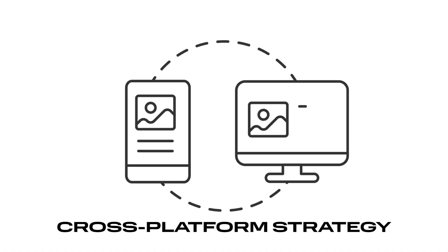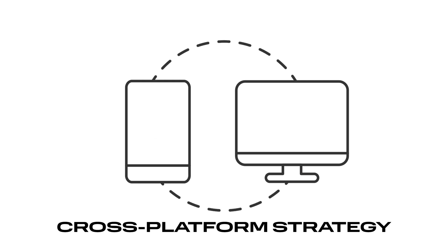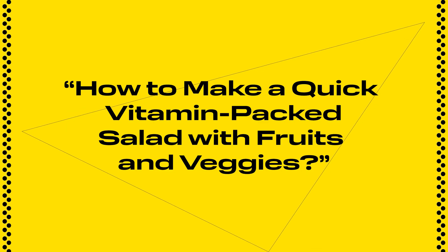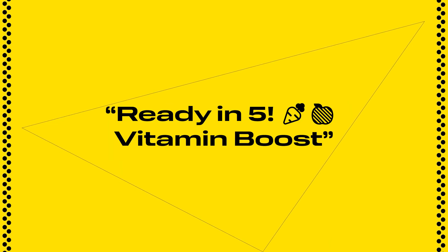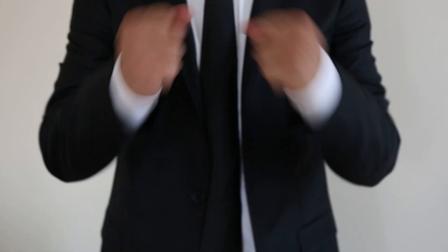And if you're posting across multiple platforms, try a cross-platform strategy. One video can have different titles for different audiences. For example, a YouTube title might be 'How to Make a Quick Vitamin-Packed Salad with Fruits and Veggies,' while the Instagram Reels version could be 'Ready in 5 — Vitamin Boost.' Bottom line: flexibility is key. Titles need to match the vibe of each platform, grab attention, and stay SEO-friendly.